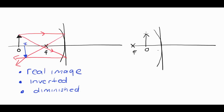Like last time, a light ray that moves parallel to the principal axis will always be reflected back through the focal point. This time, if we take a light ray going from the focal point through the top of the object to the mirror — so kind of backwards compared to before, going from the focal point to the object to the mirror — that light ray when it hits the mirror will be reflected back parallel.